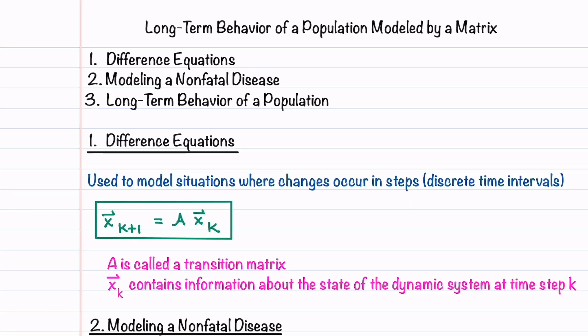In section 1.10 of this series, we looked at how difference equations can be used to model situations where changes occur in steps or discrete time intervals. A difference equation is an equation that can be written in the form x_{k+1} = A x_k. A is called a transition matrix and x_k contains information about the state of the system at time step k.